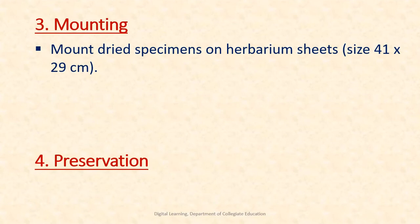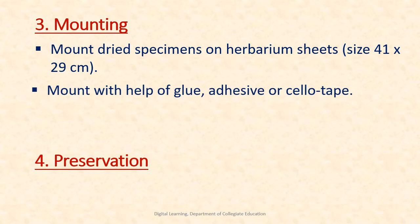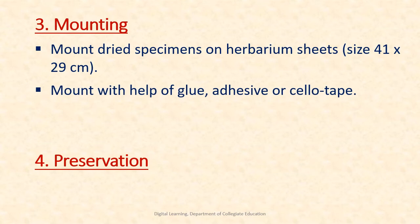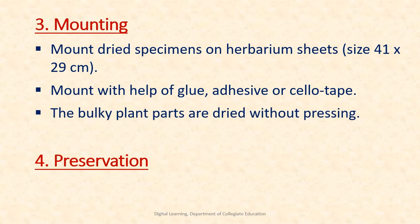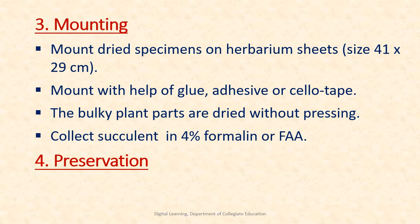The third step is mounting. The dried specimens are mounted on a herbarium sheet of a standard size. Mounting is done with the help of glue or cello tape. Bulky plant parts like dry fruits, seeds, etc. are dried without pressing and are put in small envelopes called fragment packets. Succulent plants are not mounted on a herbarium sheet but are collected in 4% formalin or formalin-acetic acid alcohol.